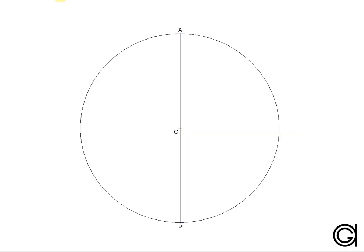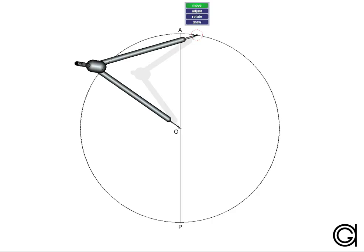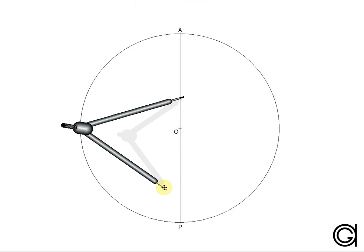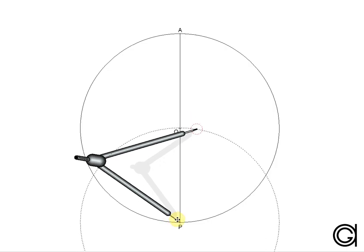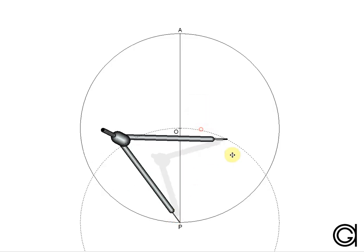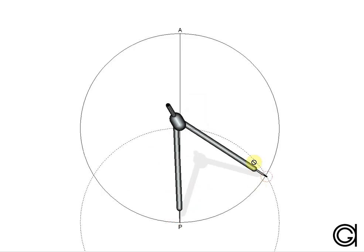This point A is going to be the first vertex of our equilateral triangle. So the next step is to set our compass to the length of the original circle and centering our compass on point P, the bottom of our vertical diameter. We are going to draw an arc which intersects our previous circle at two points.